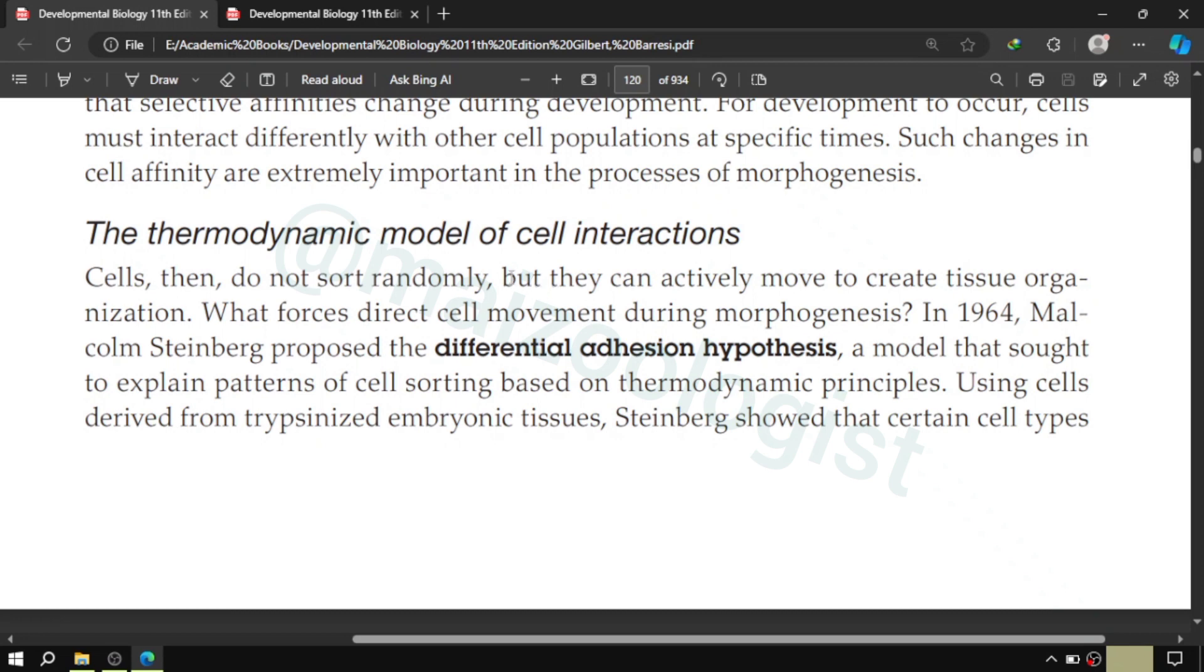By now we are aware of the fact that cells do not organize randomly in our bodies. Cell do not sort randomly, and the other fact that we know is that cells can actively move to create tissue organization. We have seen that the cells of three germ layers, they move with respect to each other during morphogenesis.